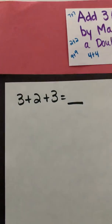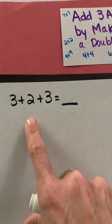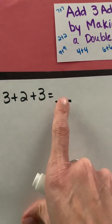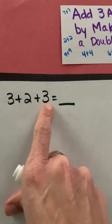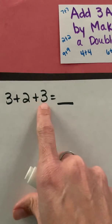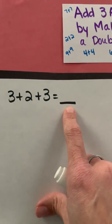So here you can see that we have an expression and then once we solve it we'll have an equation of 3 plus 2 plus 3. So an addend plus an addend plus an addend will give us our sum.